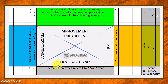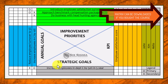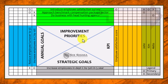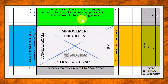What we have here is a matrix that is very useful to translate strategic goals into annual goals, into improvement priorities, and measurements to keep track of those improvement priorities. It also makes clear who is responsible for which part of all our improvement priorities.